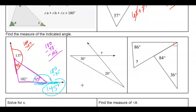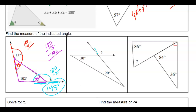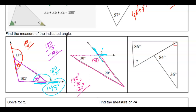Looking at example three, we have two lines being crossed, so we have vertical angles here and here — those are equal measures. Looking at this as one big triangle, all three angles have to add up to 180. So 180 minus 30 minus 20 gives us 130 degrees.